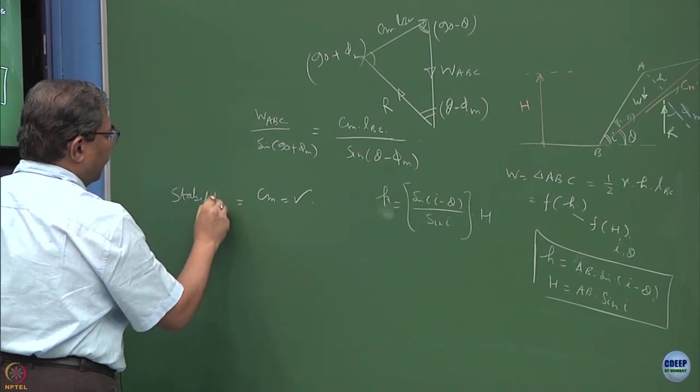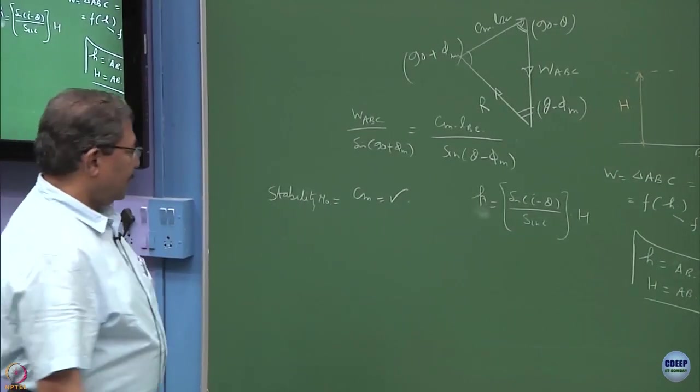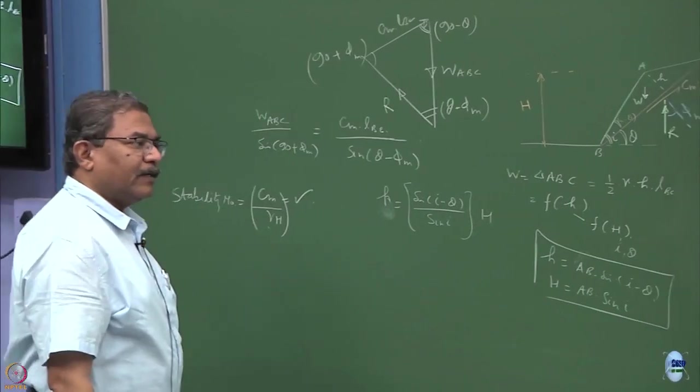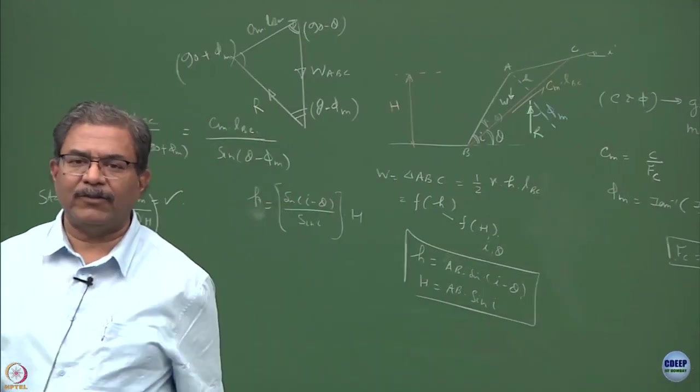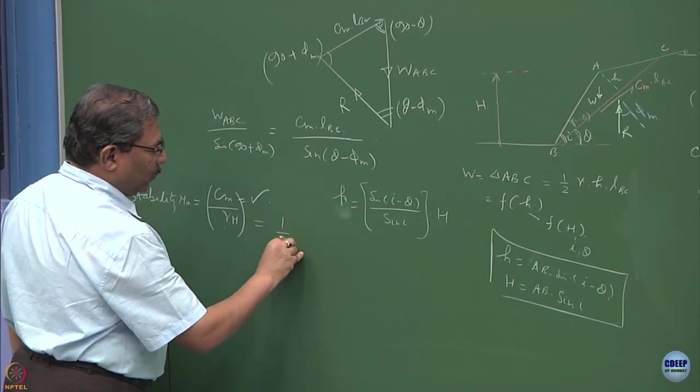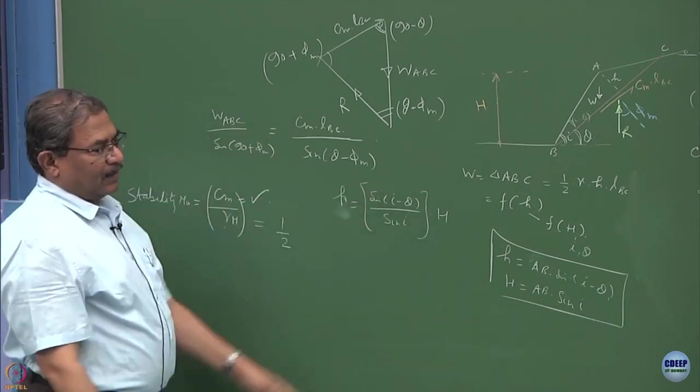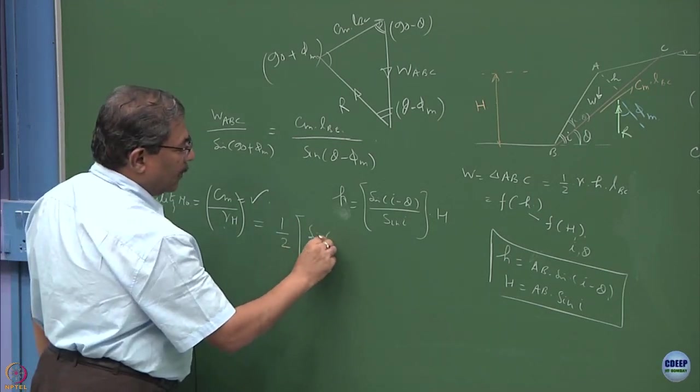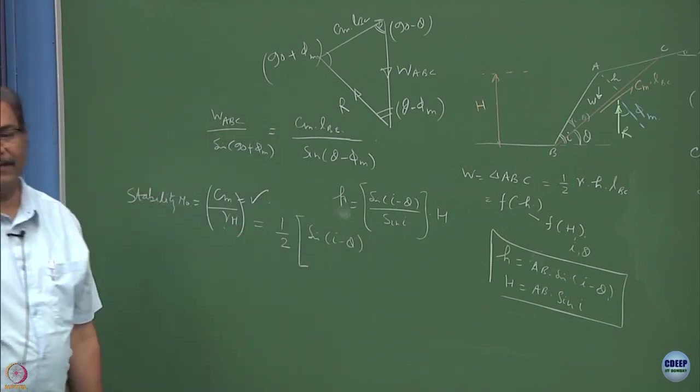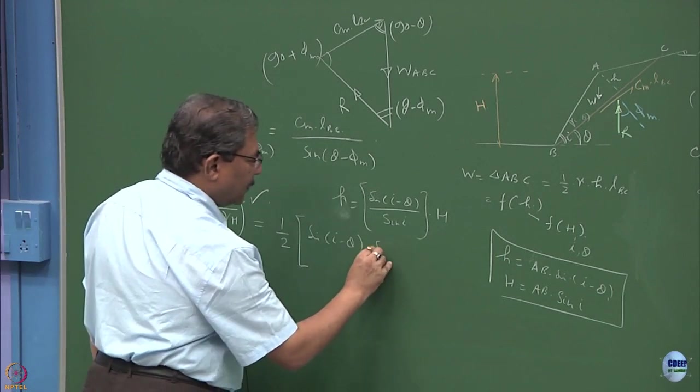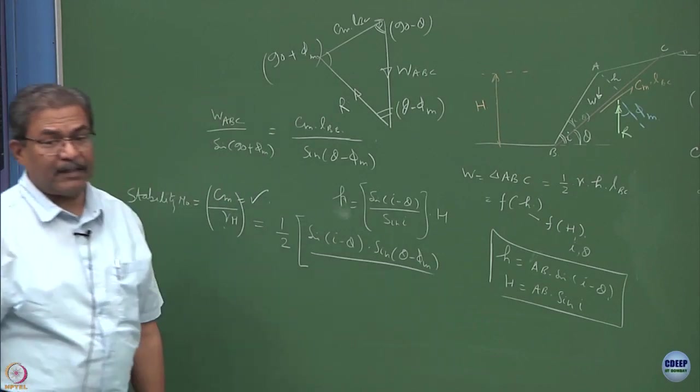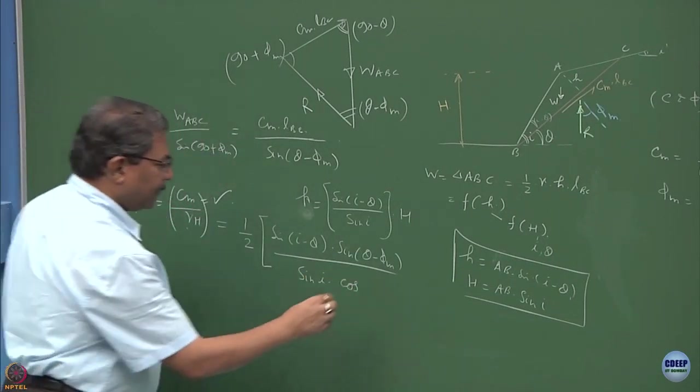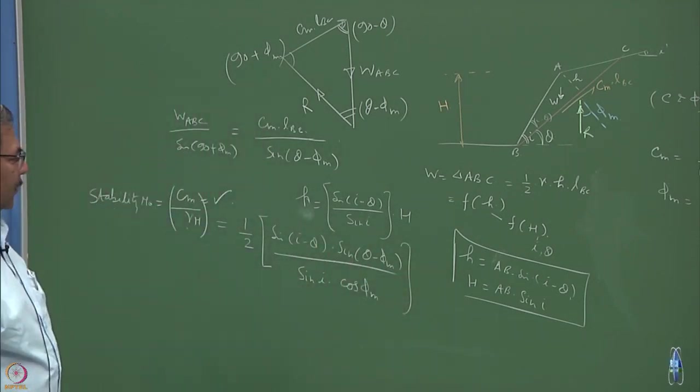So what will be the value of stability number? CM over gamma H. Just quickly compute what is the factor which you are going to get. This will be equal to half, because of half gamma H square which is coming over there. So this will be equal to S sin of i minus theta into sin of theta minus phi m, this whole thing divided by sin i into cos of phi m. So this is the expression which we have obtained.